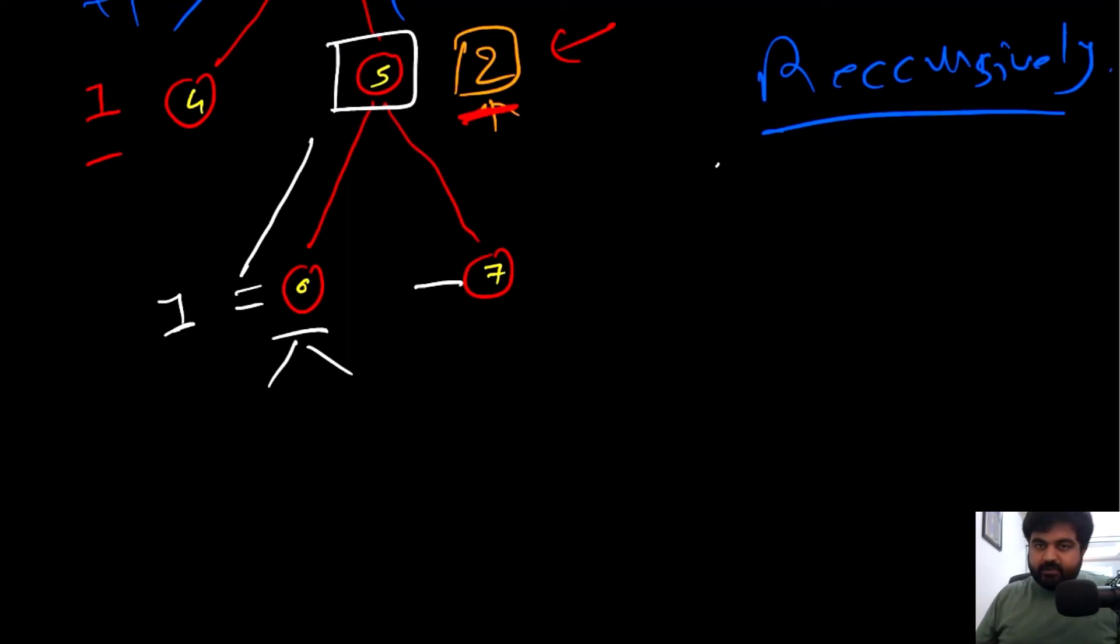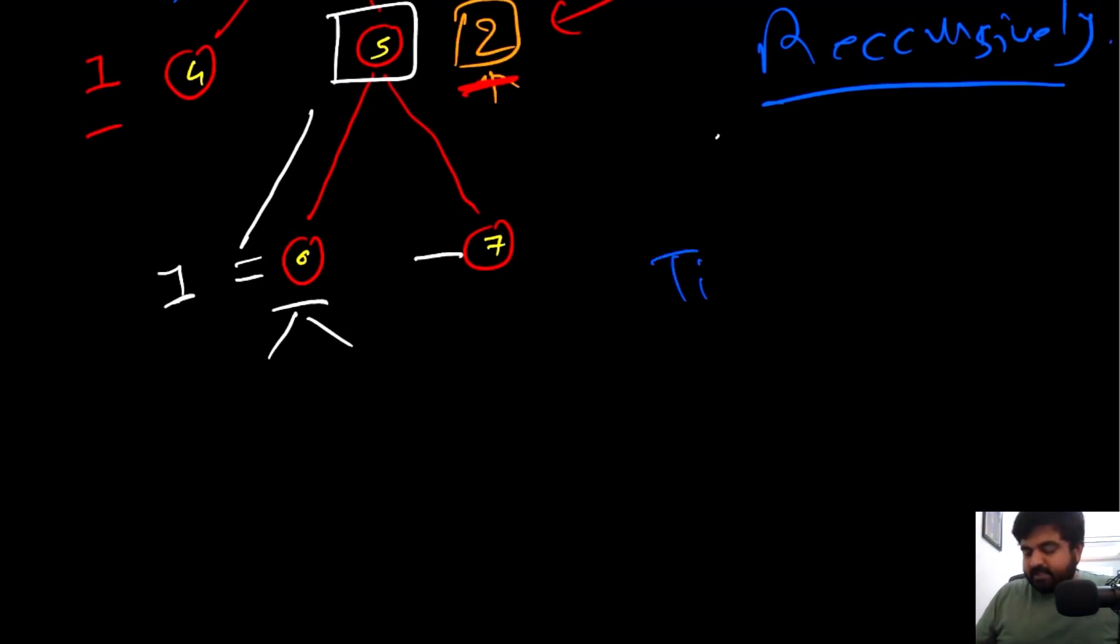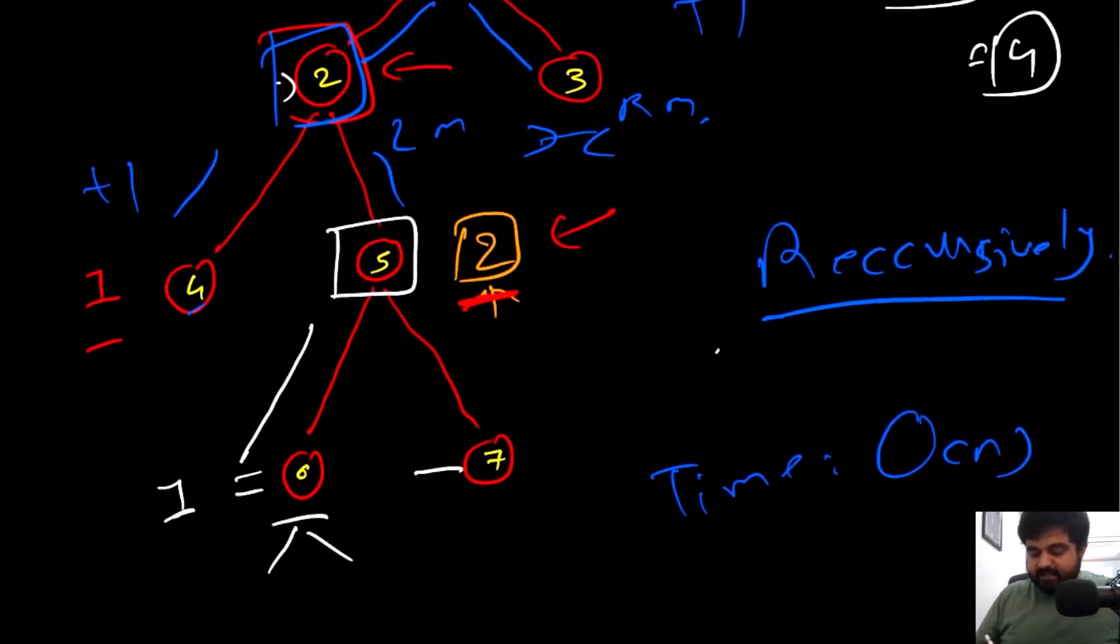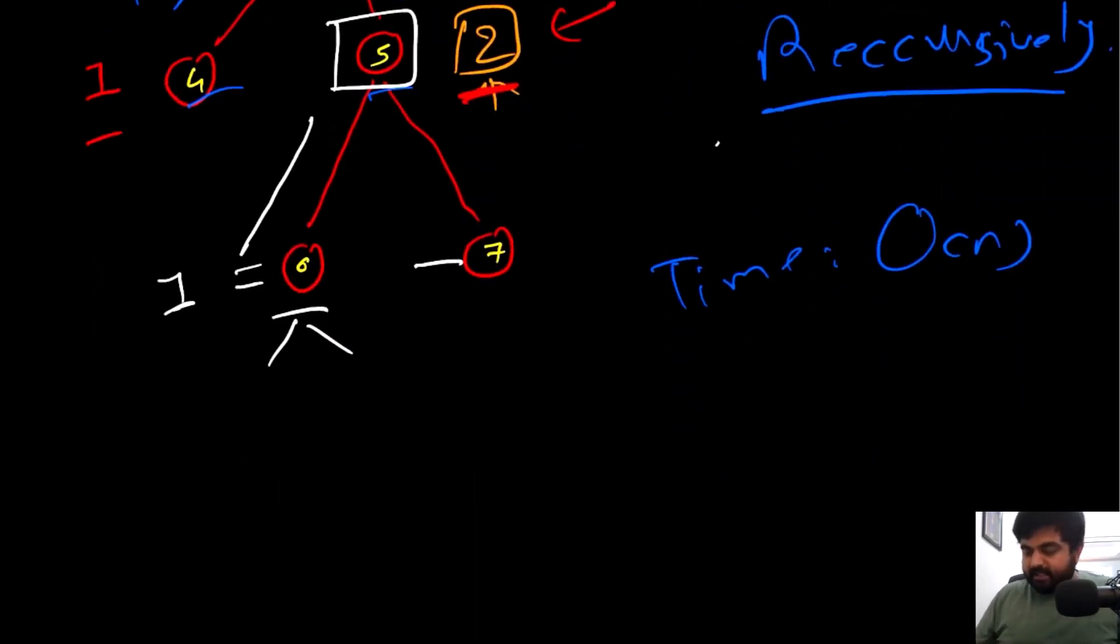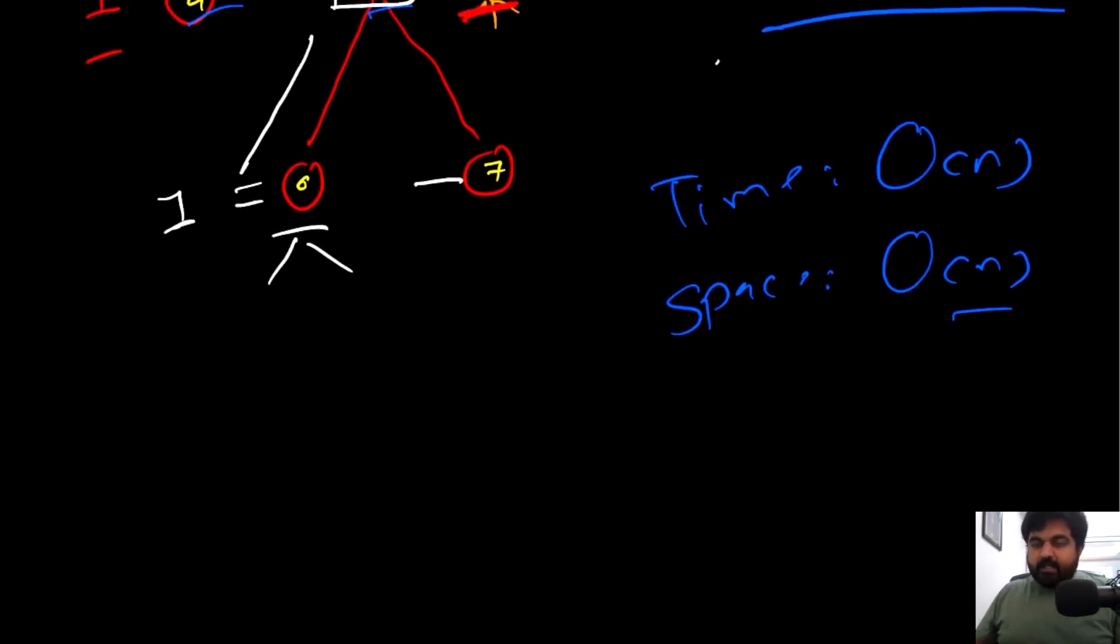This would be the optimal solution. If we see the time and space complexity, the time complexity is big O of n because we will have to iterate over every single element. The space complexity is also big O of n because we might have to store all the values inside our recursive function.